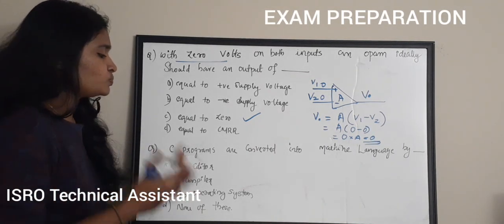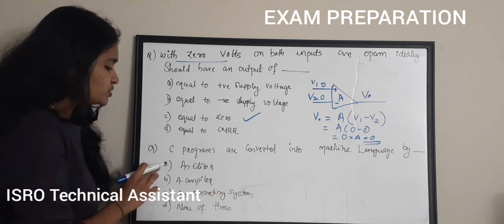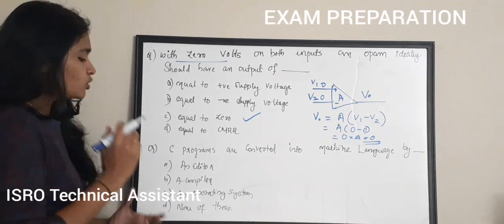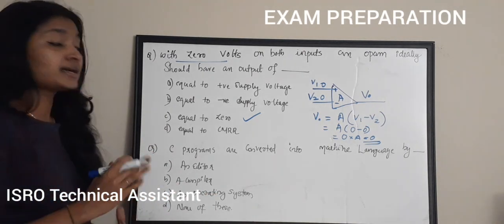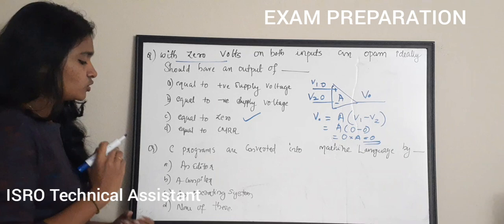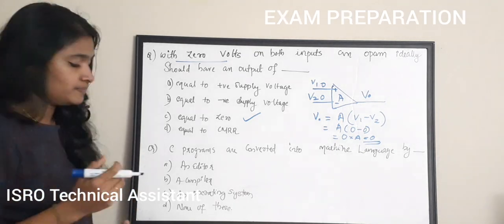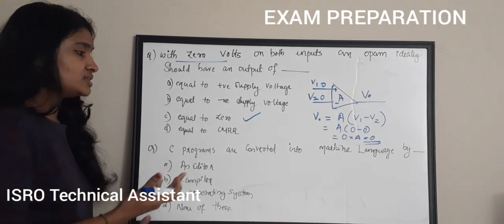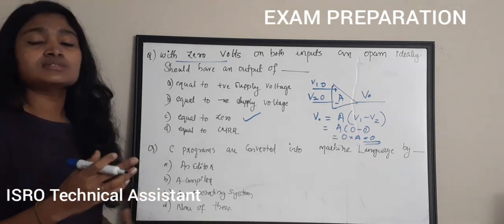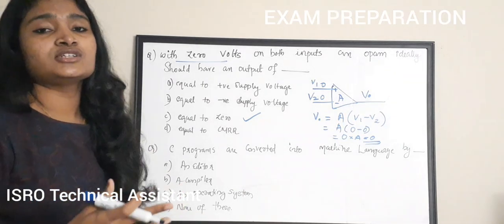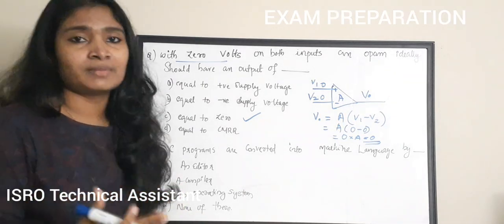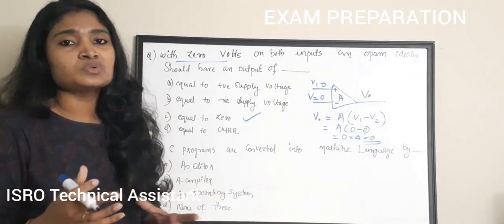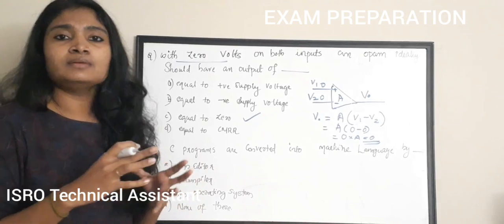The second question: C programs are converted into machine language by dash. Option A: an editor. Option B: a compiler. Option C: an operating system. Option D: none of these. This question is related to programming.